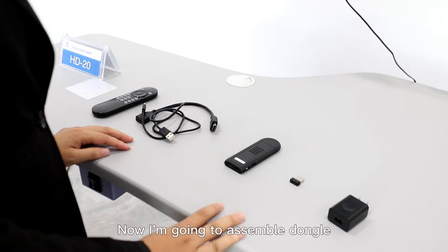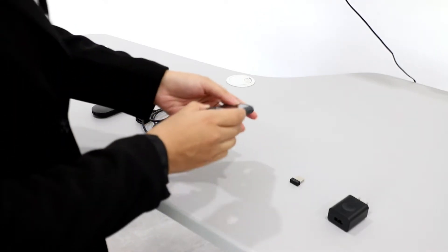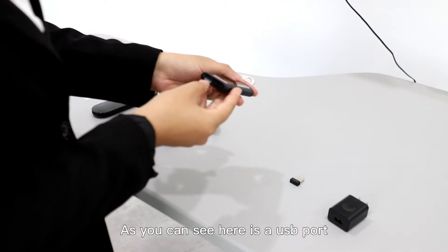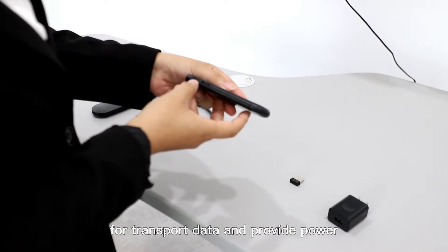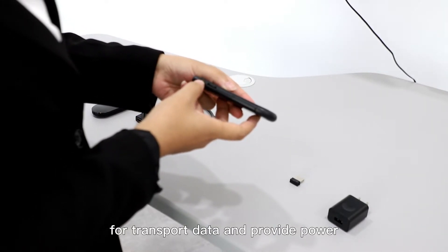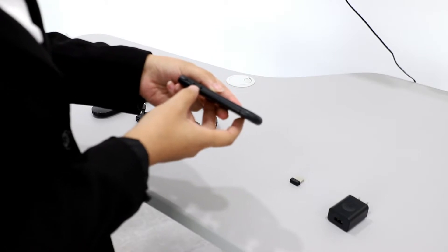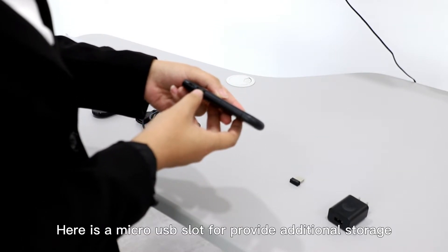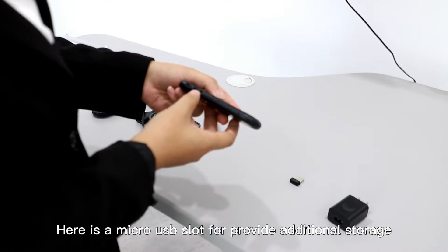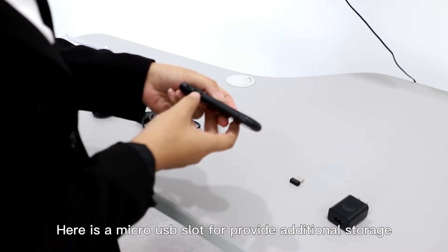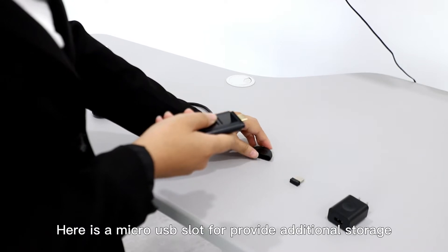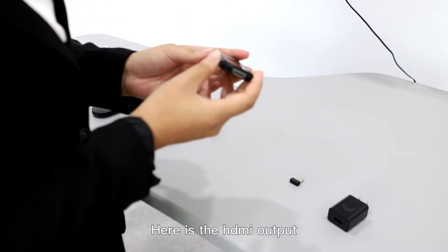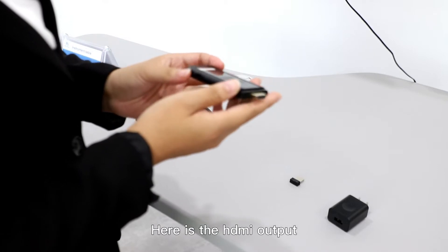Now I'm going to assemble the dongle. As you can see, here is a USB port, micro USB port for transport data and provide power. Here is a micro SD slot to provide additional storage. Here is the HDMI output.